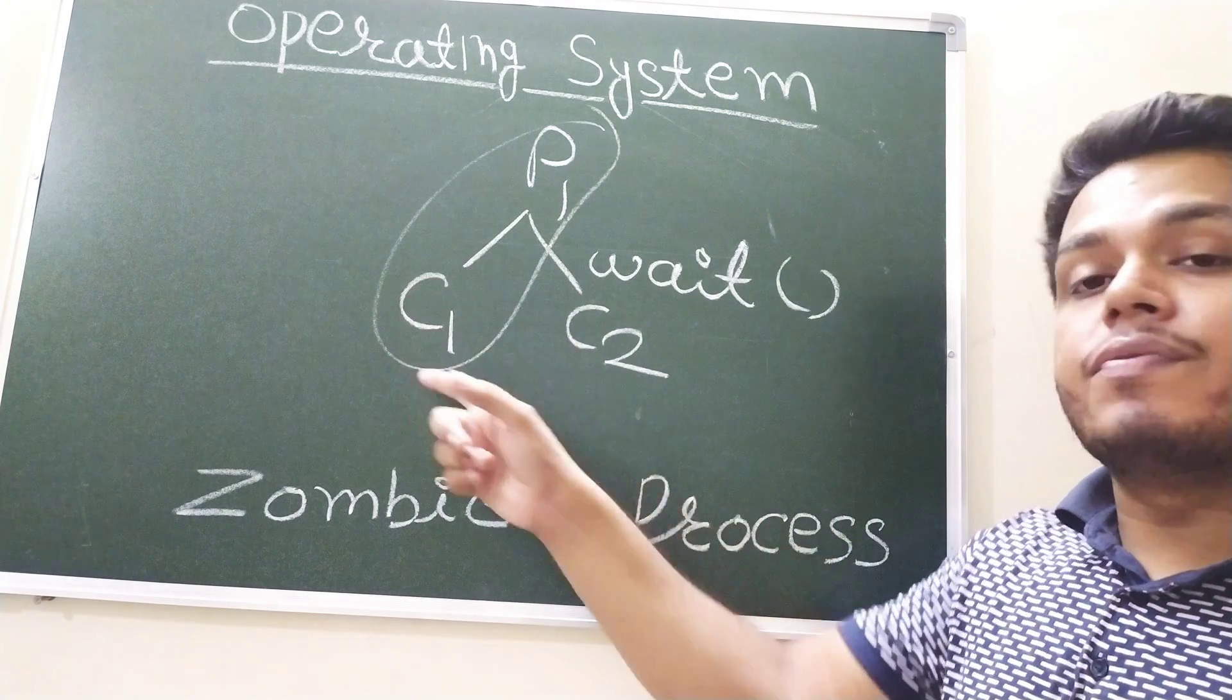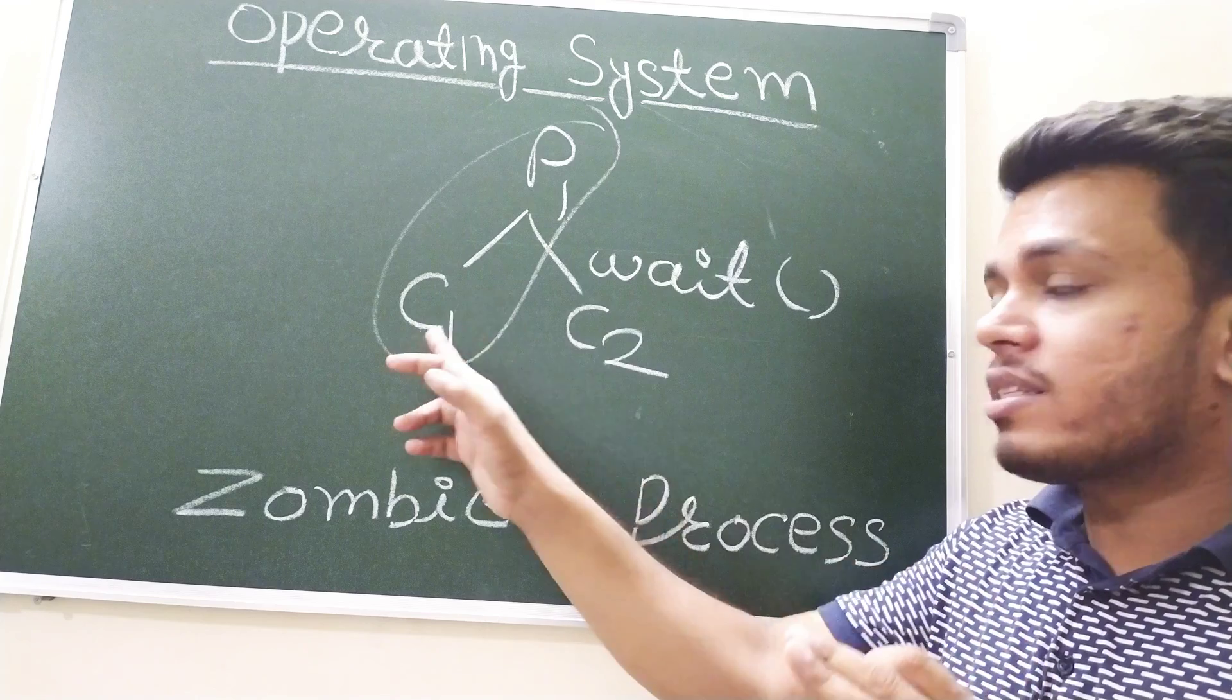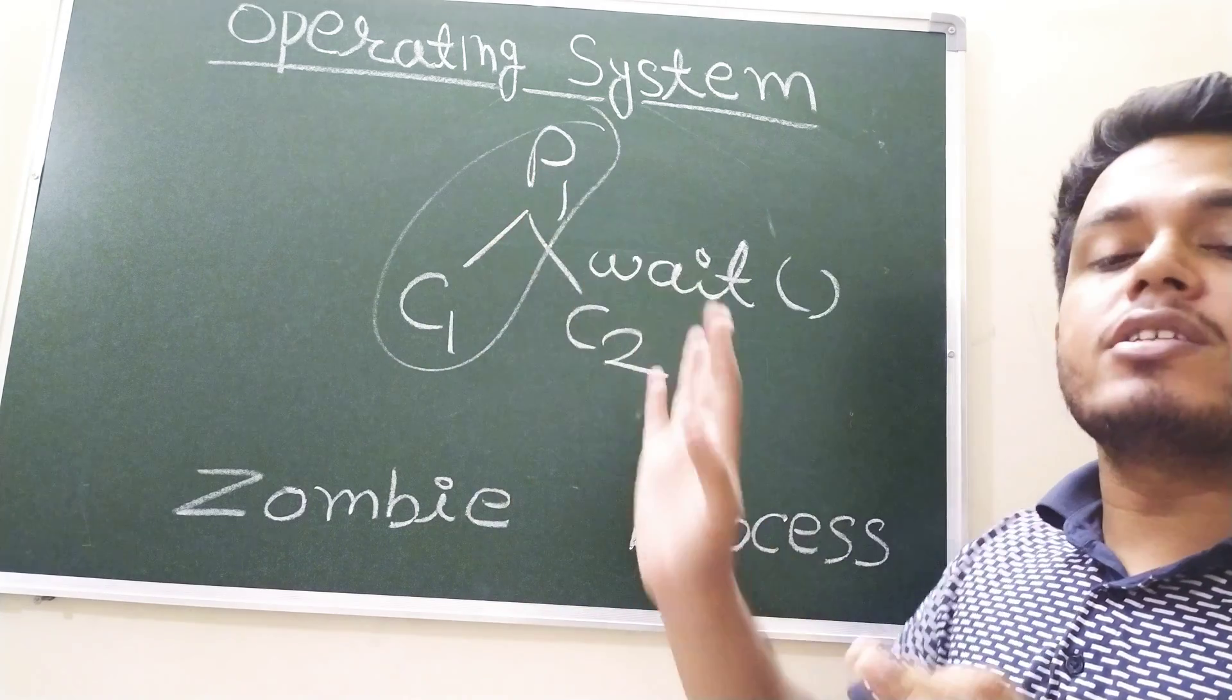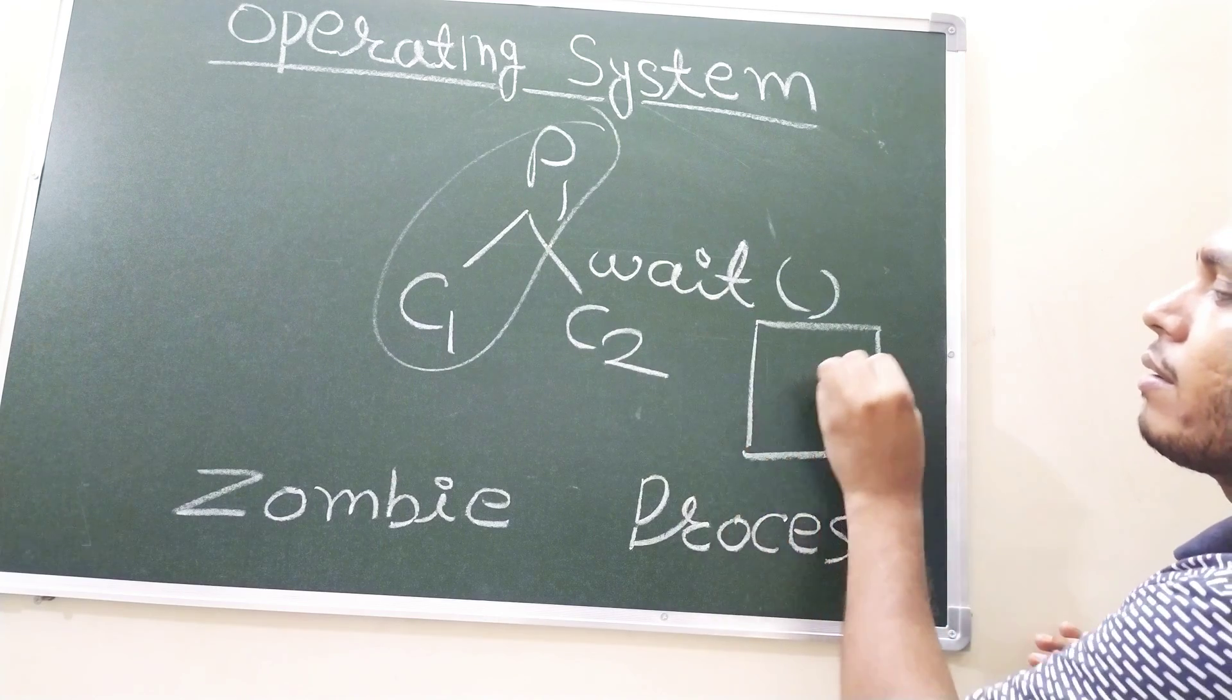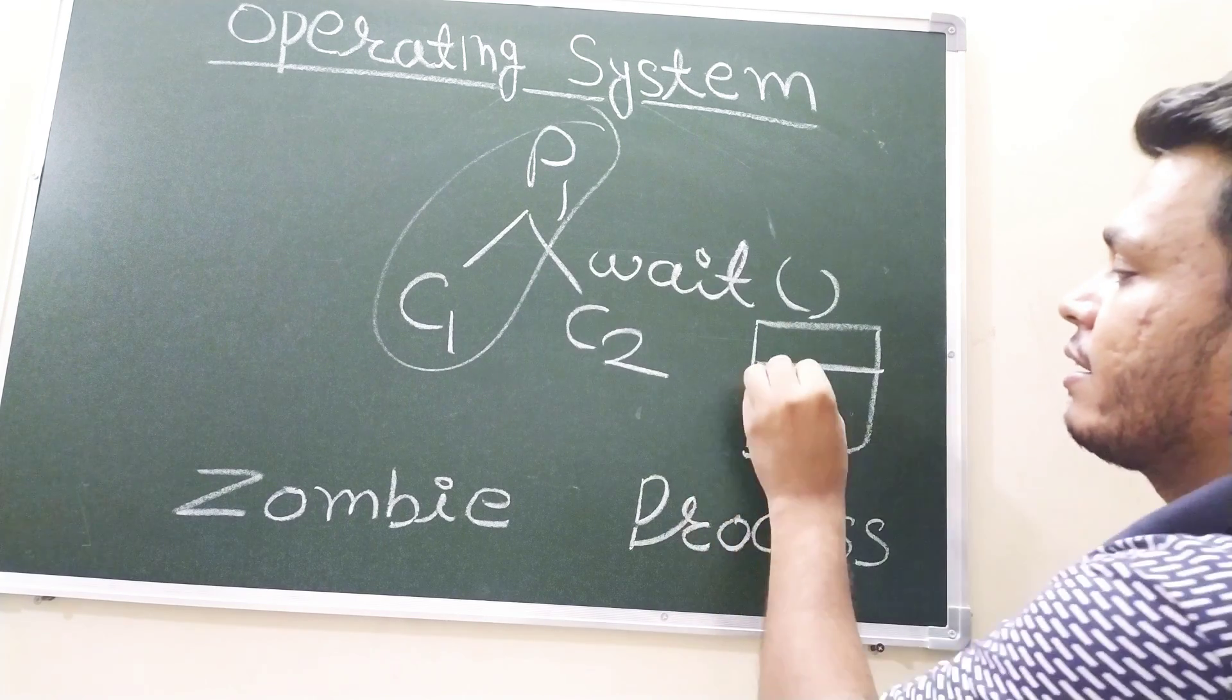If C1, although C1 has completed the task but P1 is not aware about this, so according to the process table, C1 is still there.